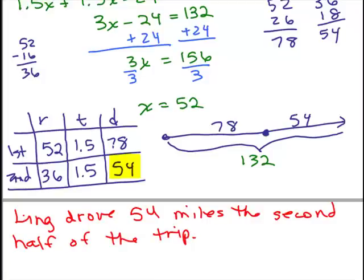Ling drove 54 miles the second half of the trip. So keep in mind here, x was 52. That's not the answer to the problem. It did not ask for the speed for the first half or the speed the second half or the distance the first half. What it asked was how many miles she drove the second part of the trip. So make sure you answer the right question here. And so that's our answer.